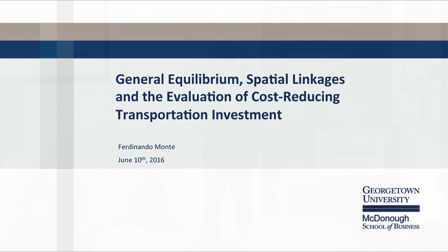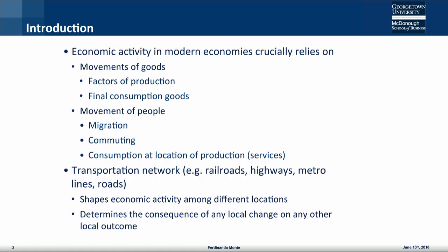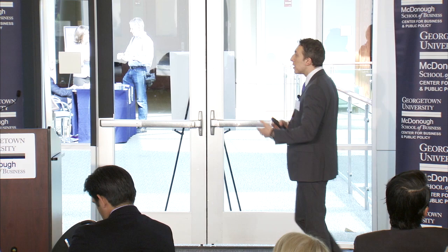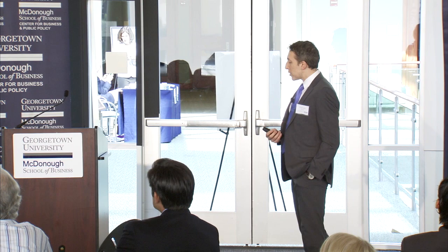Before I do that, let me motivate a little bit my approach and introduce a couple of key concepts I will keep coming back to. The economic activity in modern economies relies crucially on movement — on movements of goods: primary inputs, capital goods, pharmaceuticals, meat — but also on movement of people. People choose where to live, but they choose to work in another place. They choose to consume in other places. They migrate, they change where they live. And so the transportation network is really at the core of the economy, and it determines many things.